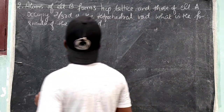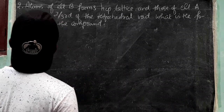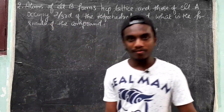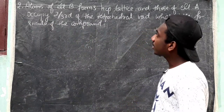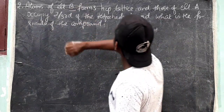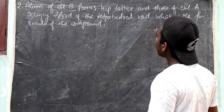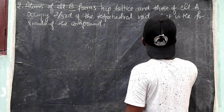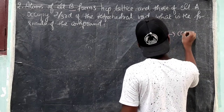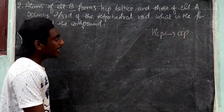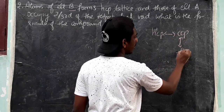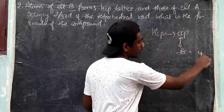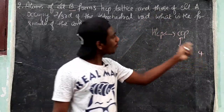Next question: atoms of element B form an HCP lattice and those of element A occupy 2/3 of the tetrahedral voids. What is the formula of the compound? B forms HCP. HCP is interconvertible with CCP, and the effective number of particles is the same. On the basis of FCC, there are 4 — so HCP also gives 4 B.